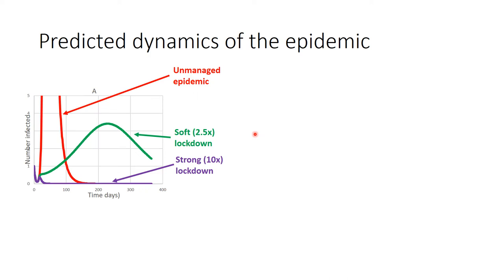We put this into a computer and asked it to calculate the dynamics of the epidemic. The number of infected people are plotted here as a function of time in days — approximately a year. For the unmanaged epidemic, shown in red, almost very soon after the first cases appear, you see an enormous increase — which we've witnessed on the planet, in China and other countries. The epidemic goes full swing and then dies down, and after about three months the unmanaged epidemic would subside.